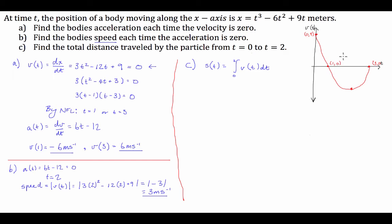We have to integrate from 0 to 2. The problem is that if we just do a straight integral from 0 to 2, the area above the curve will cancel out the area below the curve. Because distance is a scalar quantity, we need to integrate the top piece separately, then take the absolute value of the bottom piece and add them together.